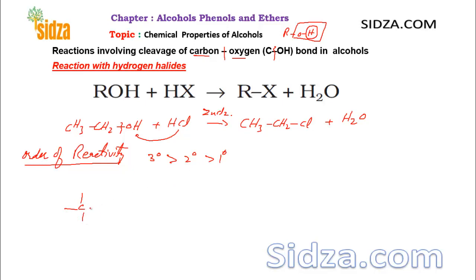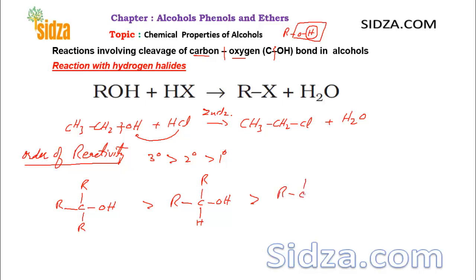A carbon with three alkyl groups — a tertiary alcohol — is more reactive than a secondary alcohol, which has two alkyl groups and one hydrogen. Secondary alcohol is less reactive than tertiary, and primary is the least reactive. So tertiary alcohol is the most reactive and primary is the least reactive.